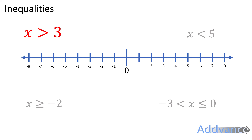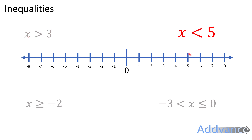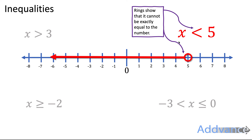x is more than 3 — that means x is any number that's bigger than 3. We draw that on the number line with a circle and an arrow going upwards from 3. For x is less than 5, we draw a circle going down from 5. The open ring shows that it cannot be exactly equal to 5 — the open ring means it must be less than 5, cannot be equal to 5.